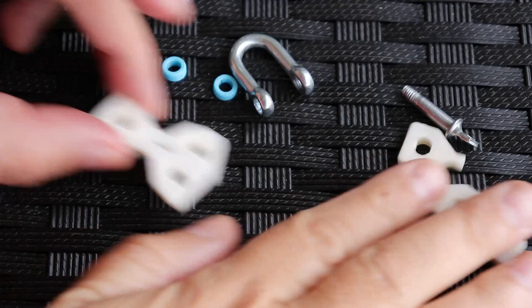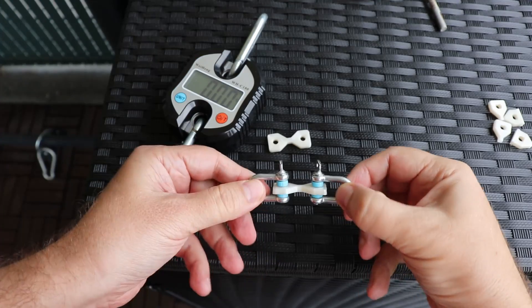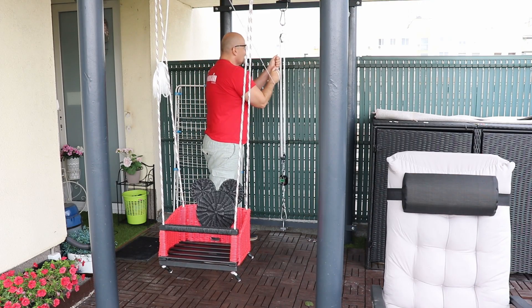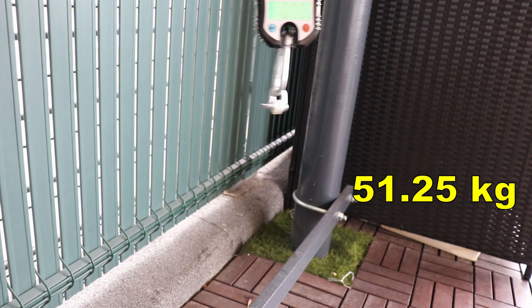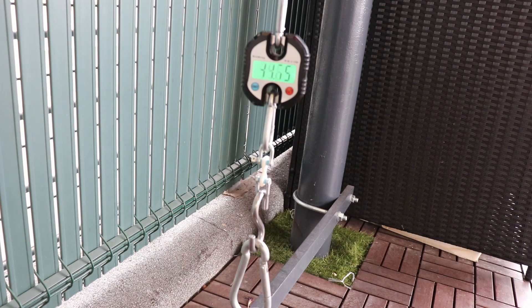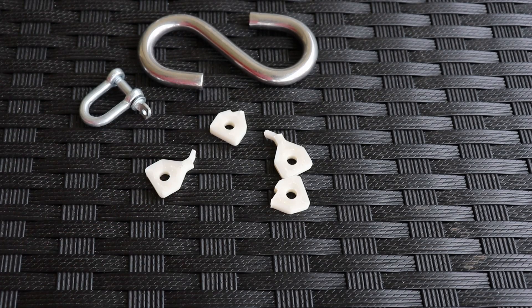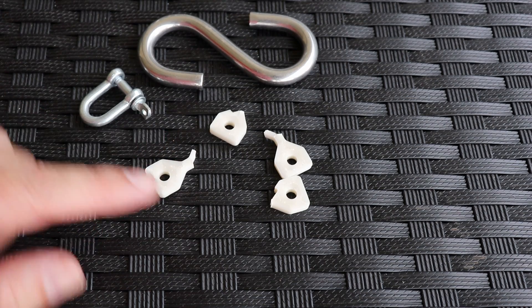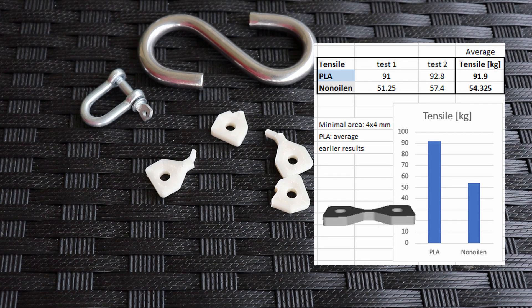And now let's see the tensile strength with these horizontally printed test specimens. And this is the result of this test. The smallest cross-section area was here 4 by 4 millimeters too, but they broke on a little bit different location, and again you can see here the numbers of this test compared to regular PLA.